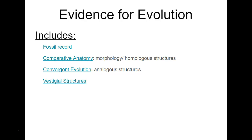Vestigial structures are pretty cool. Those are organs or structures that were once crucial to the existence of an organism, but with adaptations and a changing environment, they've become less important and are slowly disappearing over time. For example, whales have hip bones, snakes have tiny leg bones. We as humans have vestigial structures too — think of your appendix, your tonsils, your wisdom teeth, your tailbone. Those are just examples of things we clearly don't need anymore, but evolutionarily speaking, maybe we once did.